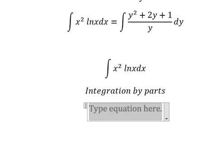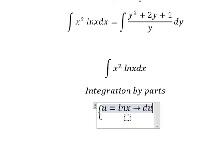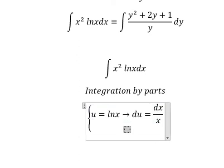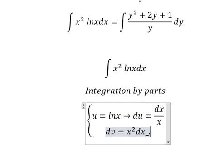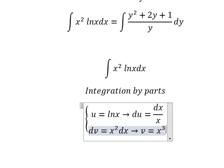So I will put u equals to ln x. For du, you get dx over x. For dv, we have x squared dx. The integration of this one, we have v equals to x to the power of 3 over 3.